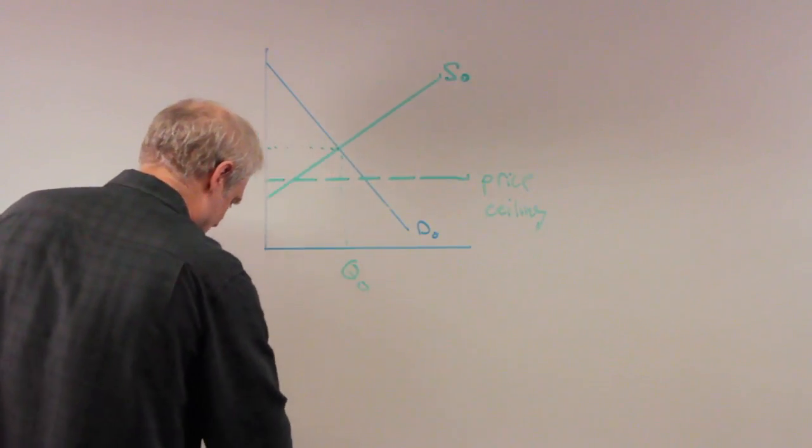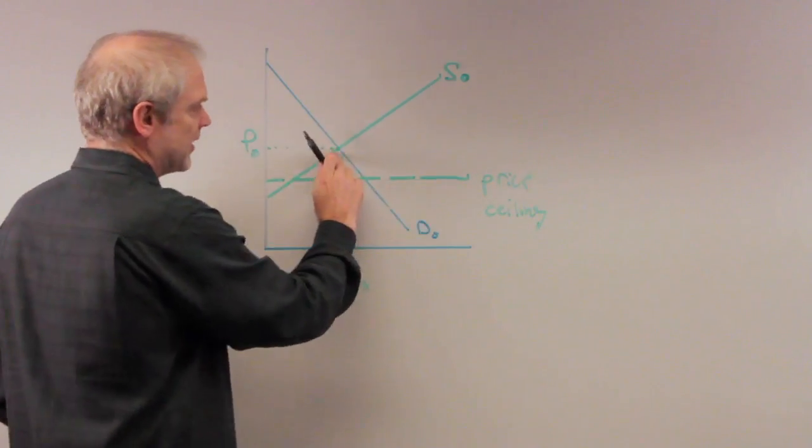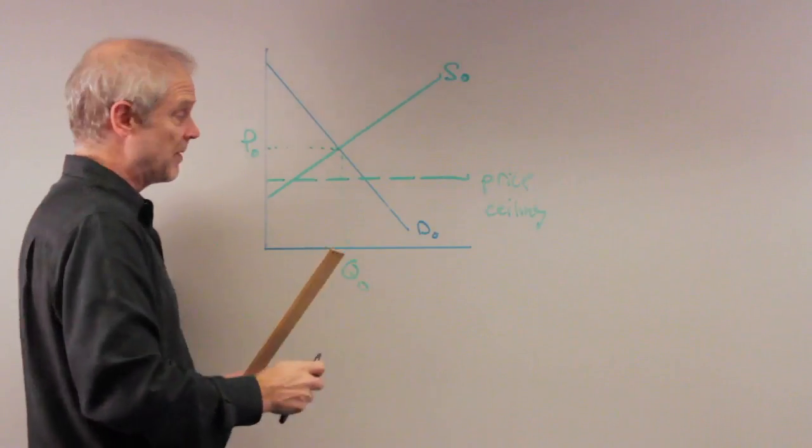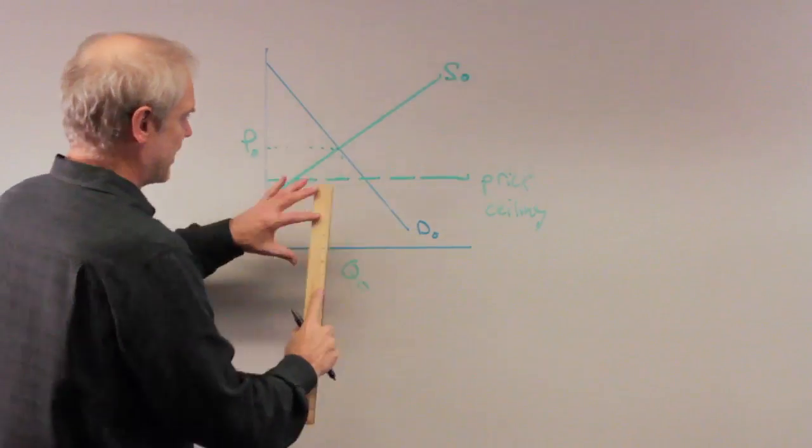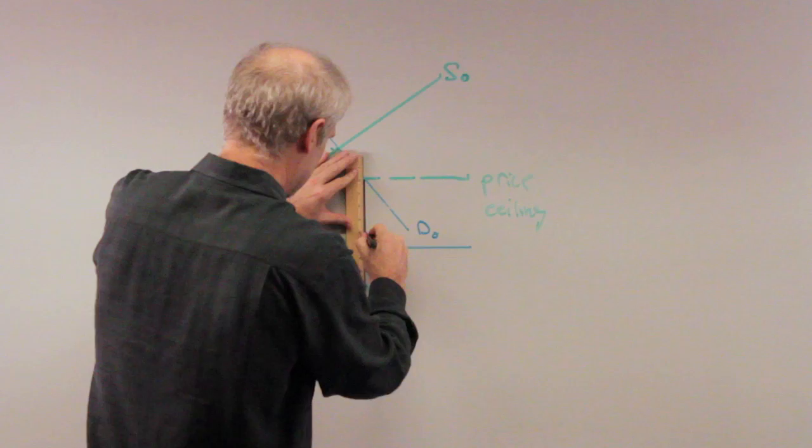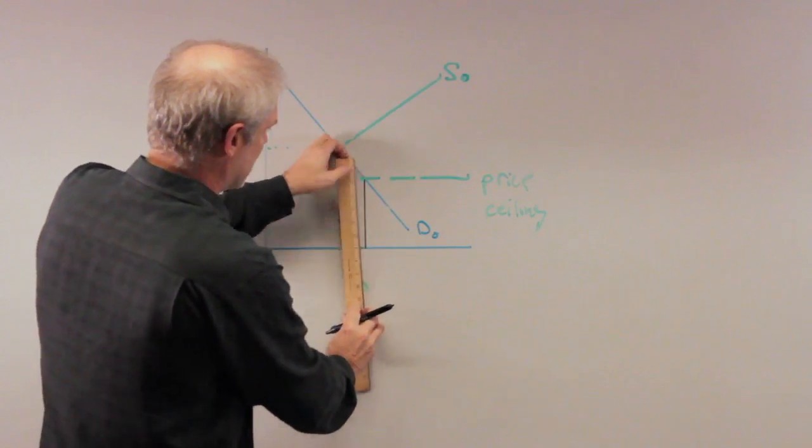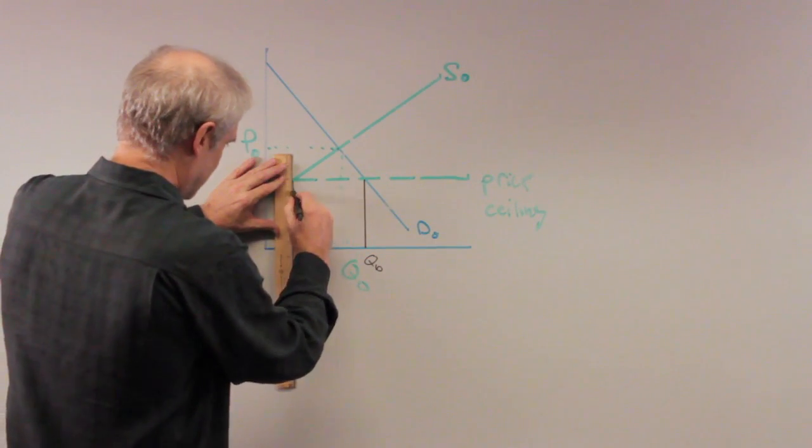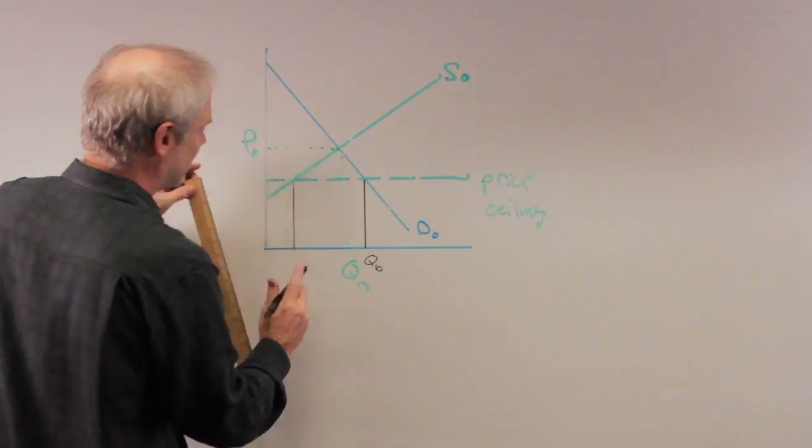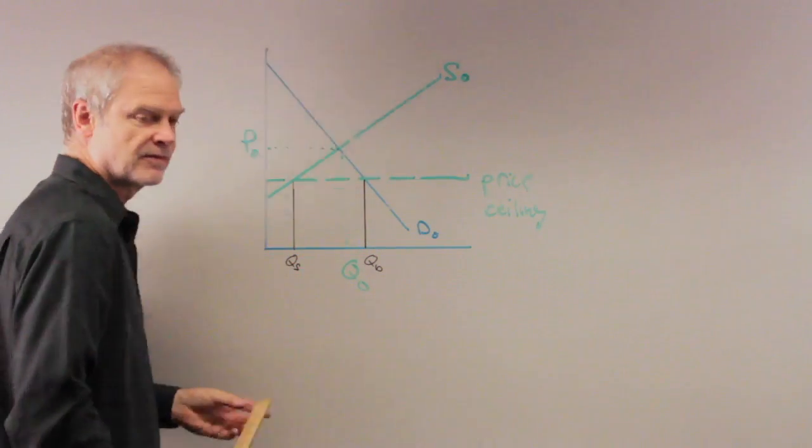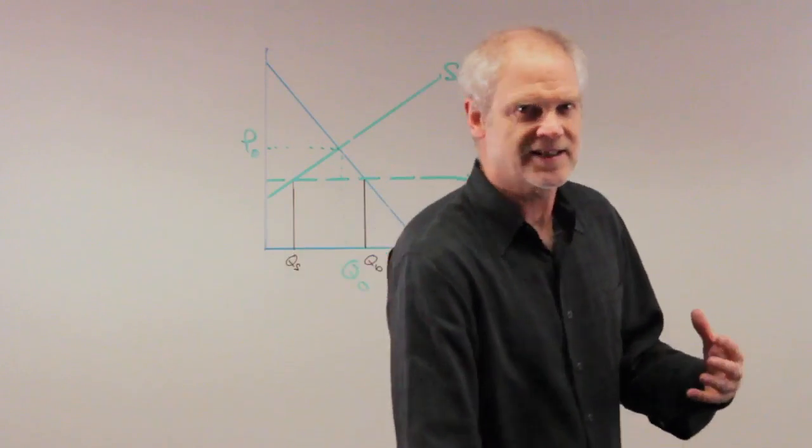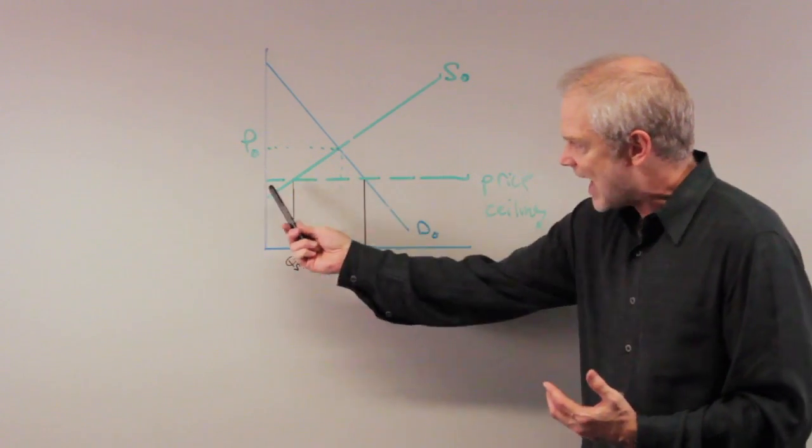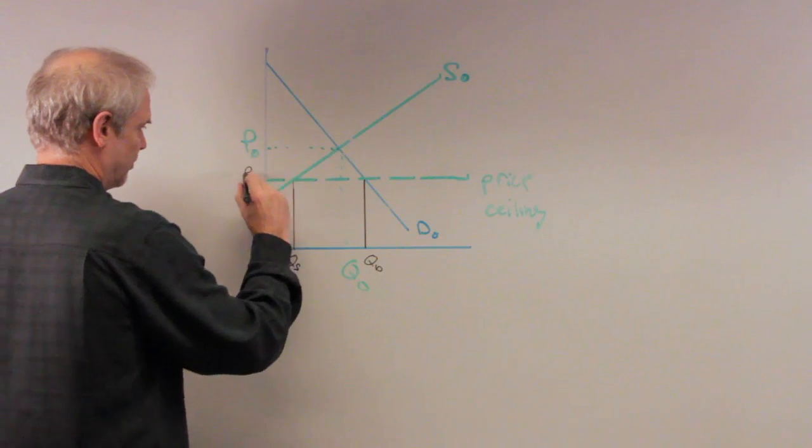Again, if I had made the price ceiling up here above equilibrium, it wouldn't have mattered, right? Because price could go above, it won't go above equilibrium. It'll stop at equilibrium. But now we have a binding price ceiling and consumers love it because they get the price below equilibrium and they're willing to demand QD. And suppliers are dismayed because the price is so low and they only want to supply QS.